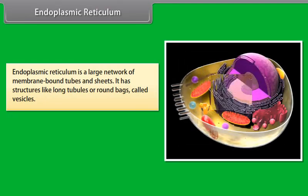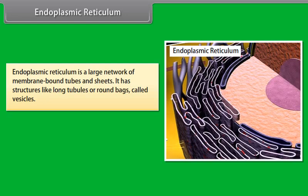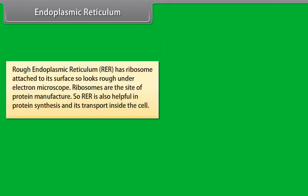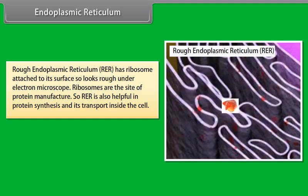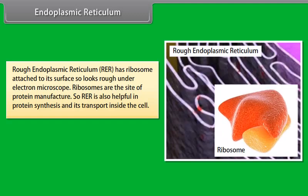Endoplasmic reticulum is a large network of membrane bound tubes and sheets. It has structures like long tubules or round sacs called vesicles. On the basis of presence of ribosomes, they are of two types: rough endoplasmic reticulum (RER) and smooth endoplasmic reticulum (SER). Rough endoplasmic reticulum has ribosomes attached to its surface, so it looks rough under the electron microscope. Ribosomes are the site of protein manufacture, so RER is also helpful in protein synthesis and its transport inside the cell.